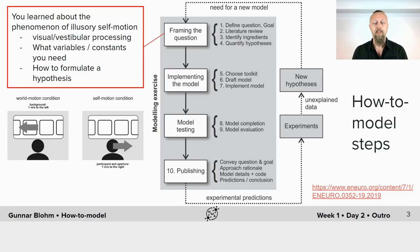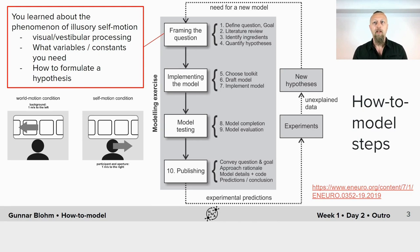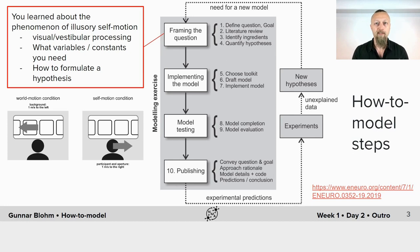So let's recapitulate what you did. These are how the 10 steps you went through fit together in the big picture cycle of model-driven discovery. You started off with experimental data describing the phenomenon of illusory self and world motion. Since the phenomenon was not understood, you wanted to gain insight by modeling it. You did your background research and learned about the phenomenon of illusory self-motion or illusory world motion. You researched visual and vestibular processing and learned what variables and other ingredients you might need. Then you learned how to use those to formulate a specific hypothesis, and through that process you also refined your question and modeling goals.